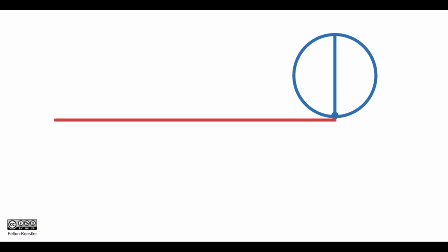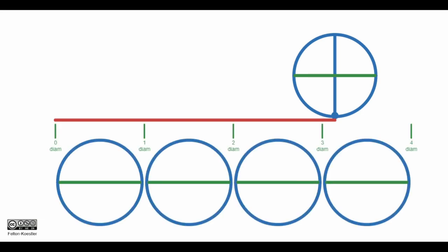To measure how long that is, I'm actually going to use the circle as my measuring tool. I'm going to show the diameter here in green and I'm going to mark off how many diameters long the circumference of the circle is. So I'm going to mark one, two, three, and four diameter lengths.